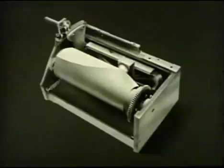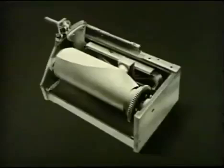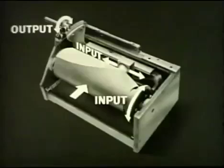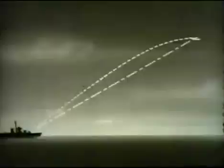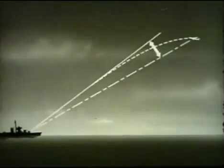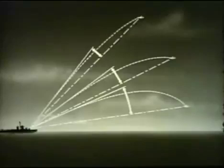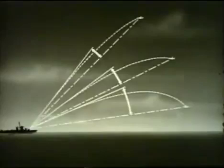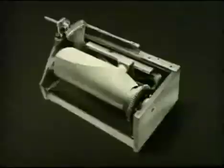A barrel cam, also called a three-dimensional cam, computes from two different inputs and delivers one output. The barrel shape is the working surface. The example shown here computes superelevation. Gun elevation is the sum of superelevation and advance elevation of the target. Superelevation increases as advance range increases, but not in direct proportion. Superelevation decreases as advance elevation increases, again not in direct proportion. Thus, superelevation is determined by advance range and advance elevation, both of which are the inputs to this cam.